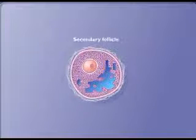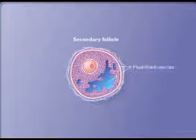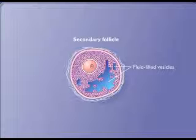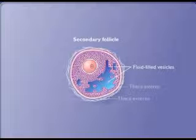The structure is called a secondary follicle when fluid-filled vesicles develop among the granulosa cells and a well-developed capsule, or theca, becomes apparent around the granulosa cells. The theca possesses internal and external layers.